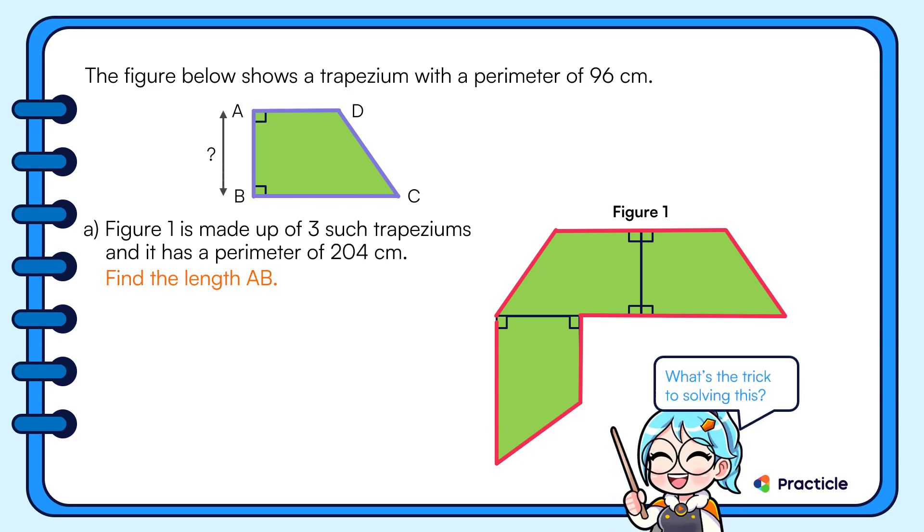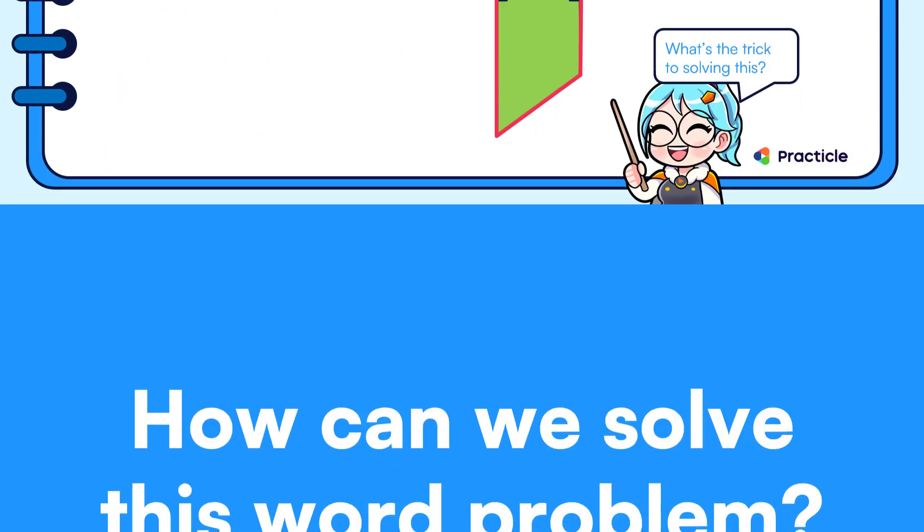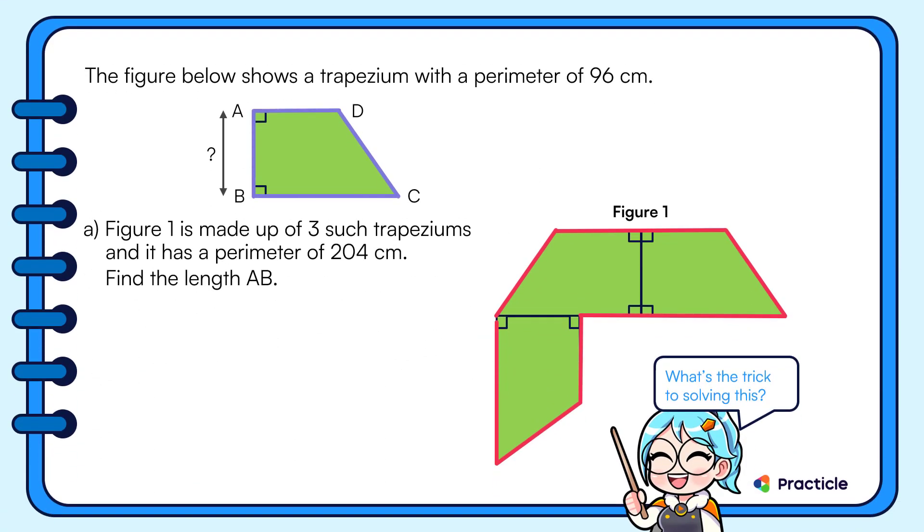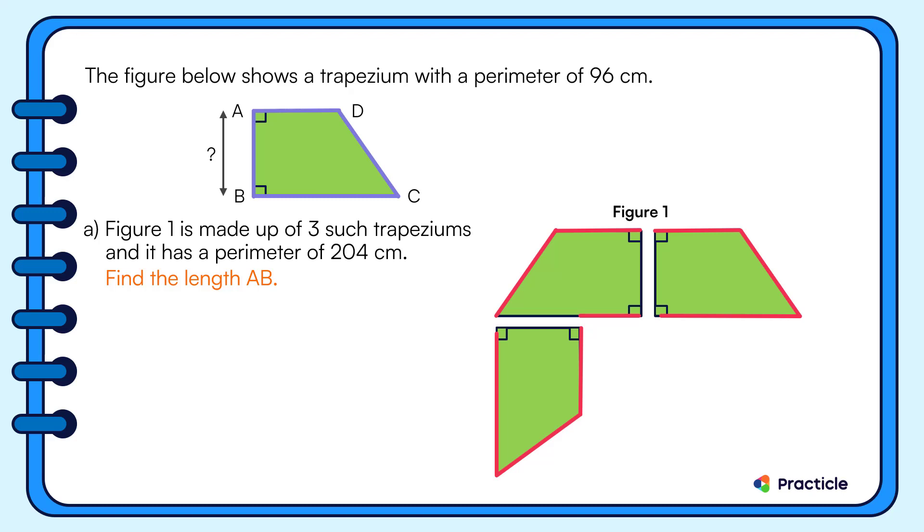So what's the trick to solving this question? This question looks pretty easy and also pretty hard at the same time. We have a figure that's made up of 3 trapeziums and we know that the perimeter of this figure must somehow be related to this trapezium. So the trick to solving this is to split this figure up into 3 trapeziums. And why would we want to do that?